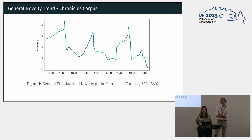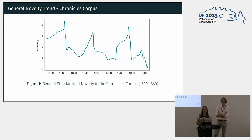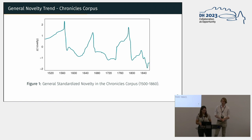First, the novelty signal of the chronicle corpus as a whole: taking all text fragments from all authors together gives a signal with three clear peaks, coinciding with three moments of uncertainty in the Netherlands. Around 1568 is the beginning of the Dutch Revolt; around 1668 is when the French invaded the southern Netherlands; and the late 18th century corresponds to the Patriotic Movement and the beginning of the Batavian Republic.